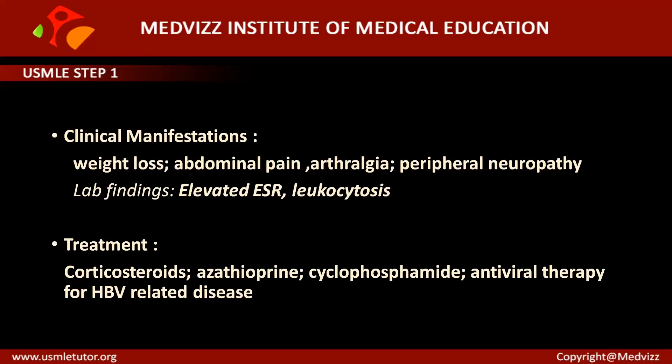Now let us talk about Churg-Strauss syndrome, because it is also a type of necrotizing vasculitis affecting small and medium-sized vessels, similar to PAN. To differentiate between Churg-Strauss and PAN clinically, Churg-Strauss has a classic triad: pulmonary vasculature involvement, plus peripheral fluctuating eosinophilia, plus late-onset asthma which is unresponsive to bronchodilators.